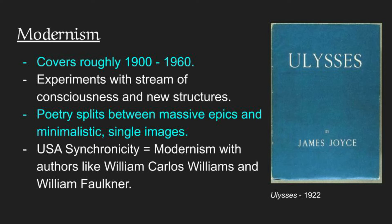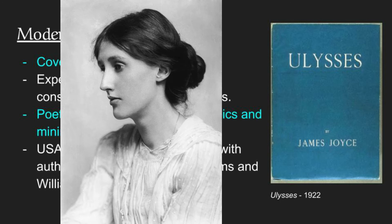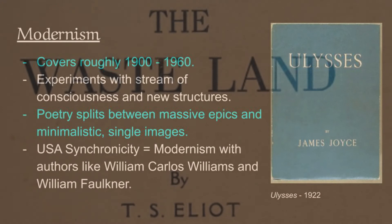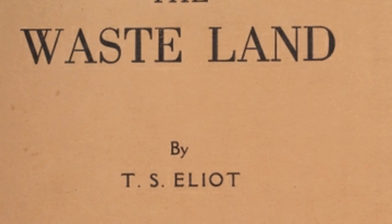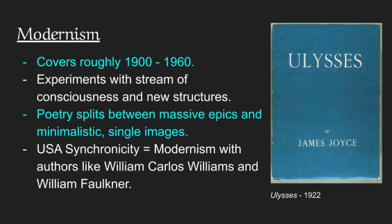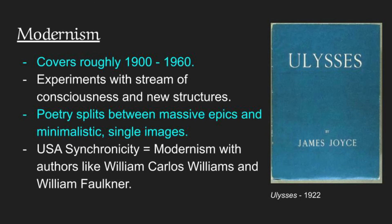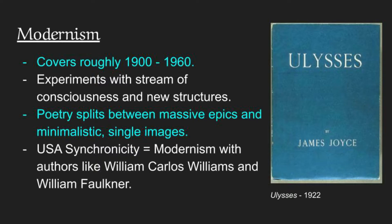If you think of Virginia Woolf or Ulysses by James Joyce, that's probably the seminal work of modernism. Poetry also undergoes an interesting split: some poets like T.S. Eliot start writing long, incredible epics — like 'The Wasteland' — that cover many pages and require footnotes to understand. But you also have minimalistic, single-image poems, such as Ezra Pound's 'In a Station of the Metro,' which is only a couple of words long. In the United States, authors like William Carlos Williams and William Faulkner are experimenting with very similar styles. Many famous American writers spent time in Europe at this time, and a few famous English writers came to America, such as W.H. Auden.